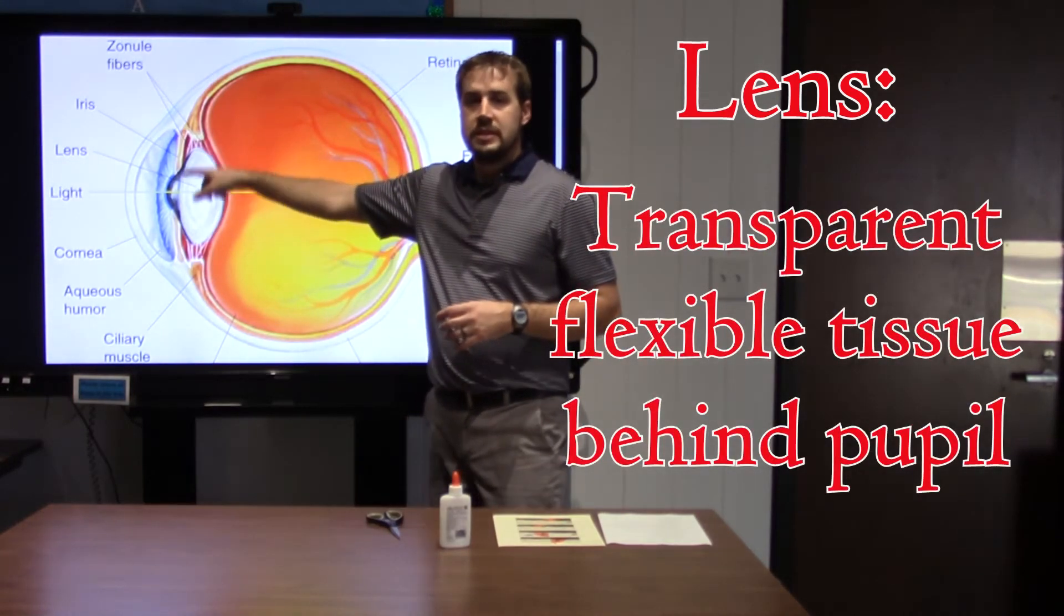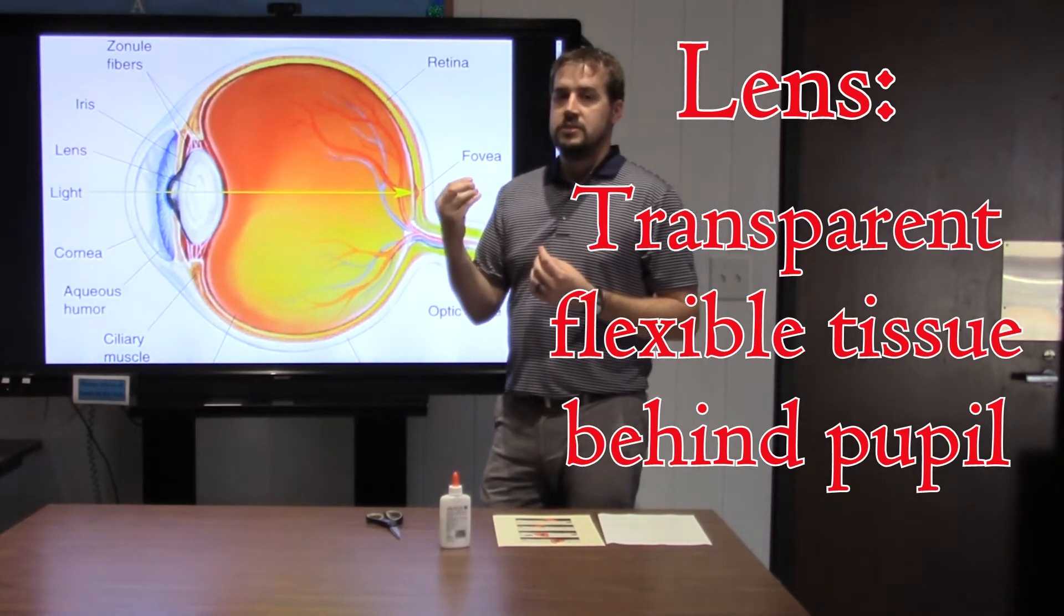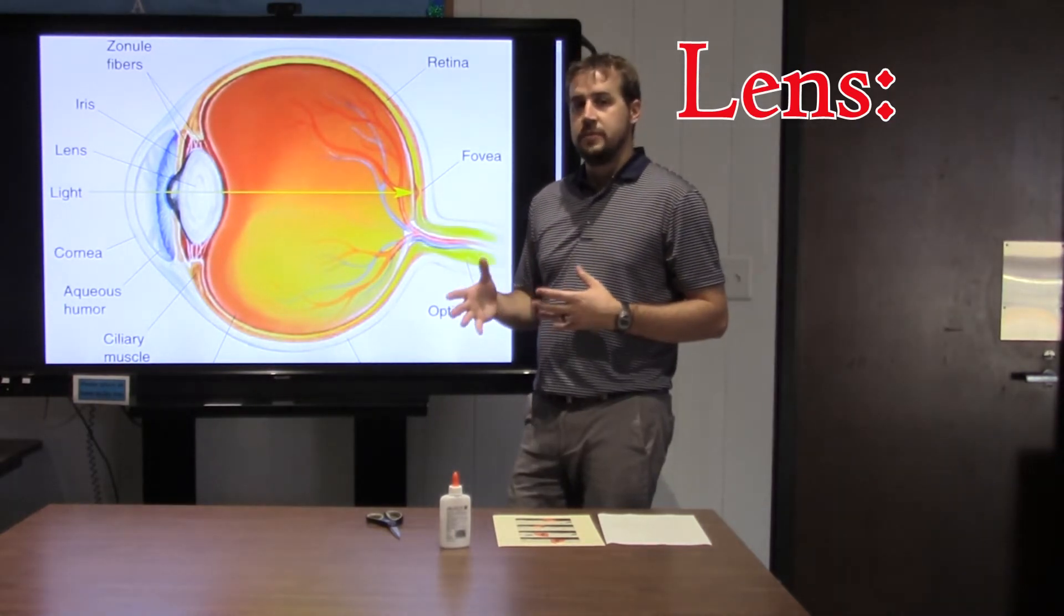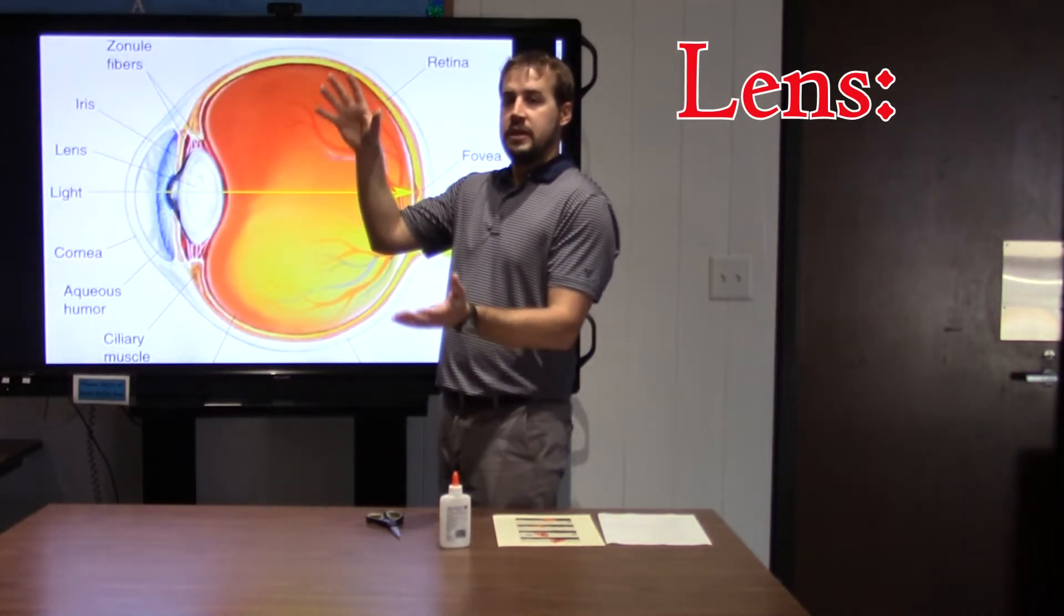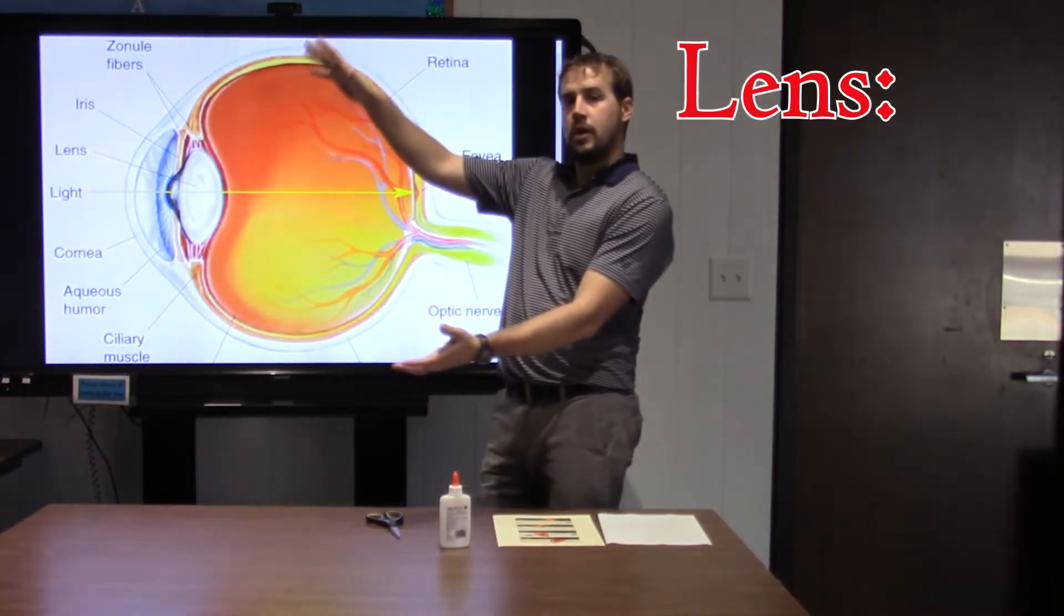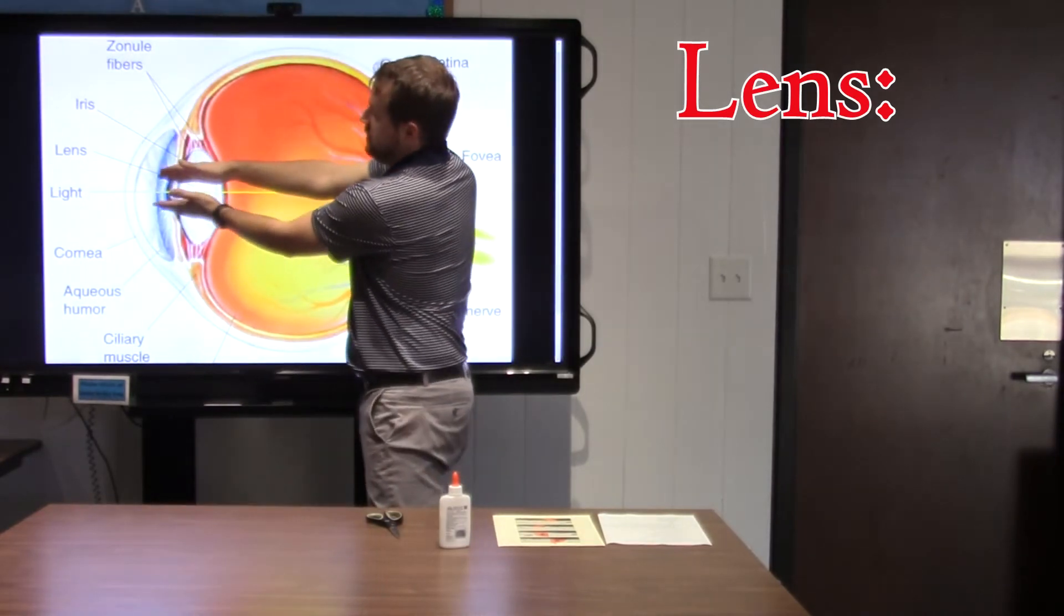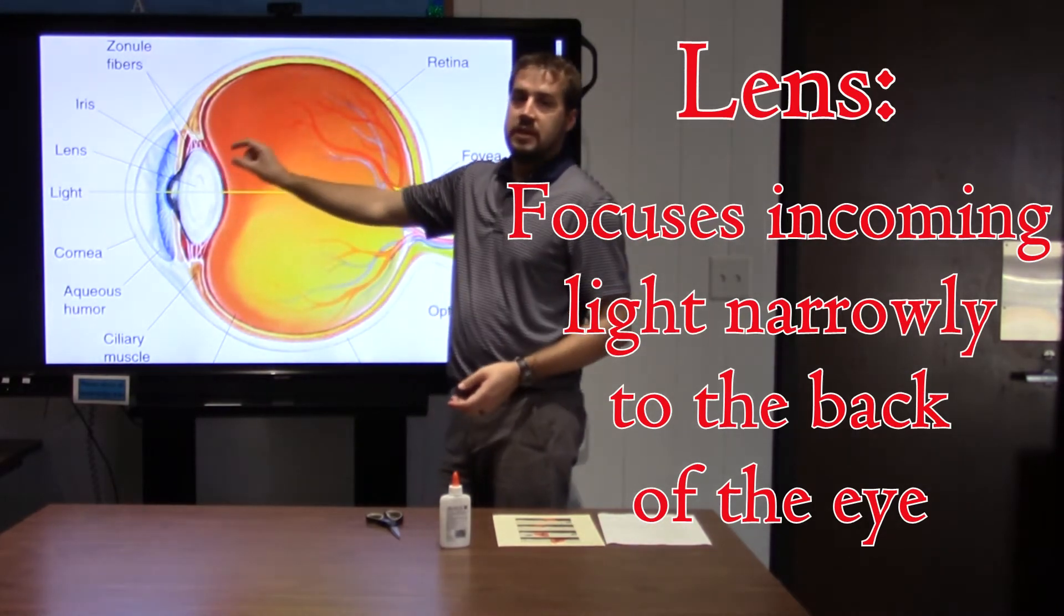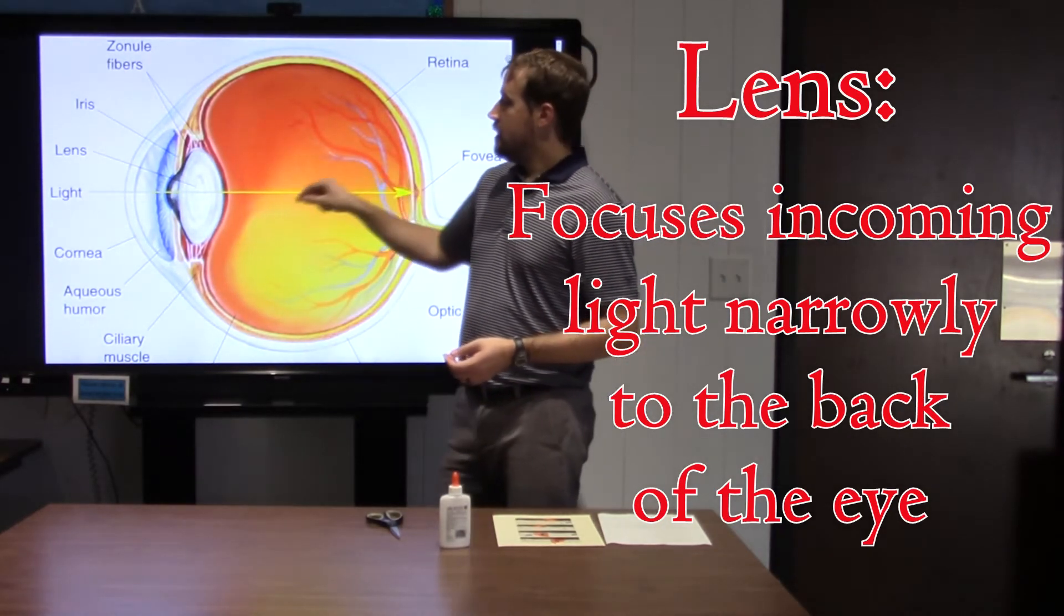So just behind the pupil is this area which is called the lens. Now, this actually is a lens designed to focus the light into a clear image that our eye can perceive. And it's a little bit different from the cornea. As I said, the cornea takes a very broad area of light and focuses it smaller so that it gets through the pupil. Now, that cornea provides a very broad focus of the light. It takes all of this and brings it into this small area. But the lens takes that smaller bit of light and focuses it really sharply as it comes towards the back of the eye.